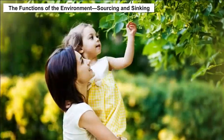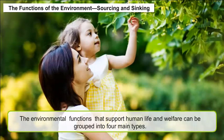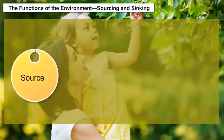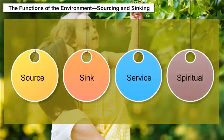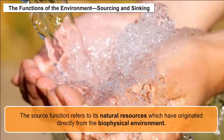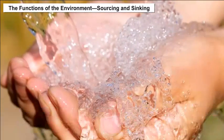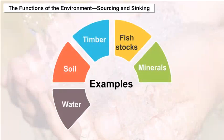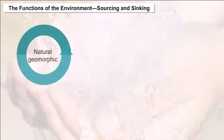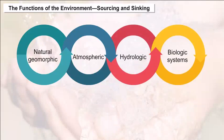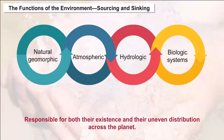Sourcing and Sinking: The environmental functions that support human life and welfare can be grouped into four main types: Source, Sink, Service, and Spiritual. The source function refers to natural resources which have originated directly from the biophysical environment. Examples include water, soil, timber, fish stocks, minerals, and fossil fuels. Earth's natural demographic, atmospheric, hydrologic, and biologic systems are responsible for both their existence and their uneven distribution across the planet.